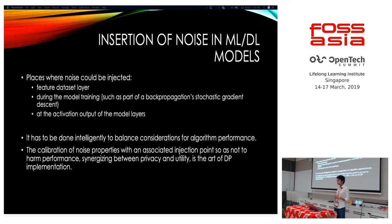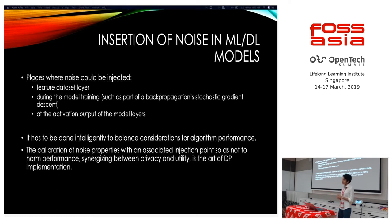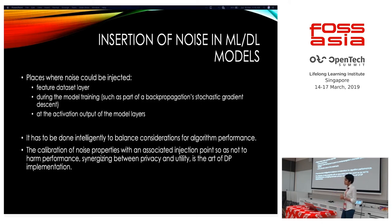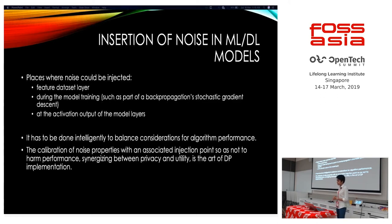The places where noise could be injected are: the feature/dataset layer, during model training as part of backpropagation SGD, or at the activation output of the model layer. When you inject noise, it has to be done intelligently to balance algorithm performance considerations. The calibration of noise properties is the subtle art of differential privacy implementation — finding a balance between privacy and utility.